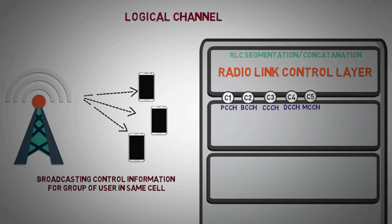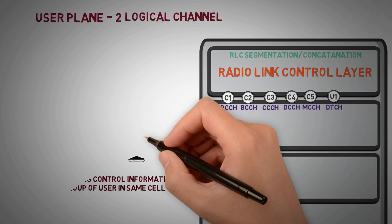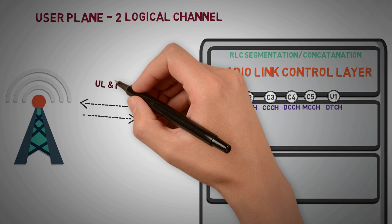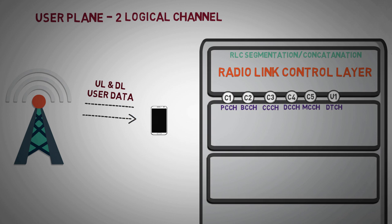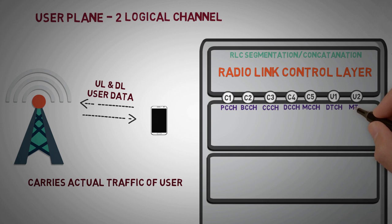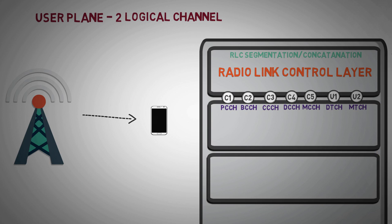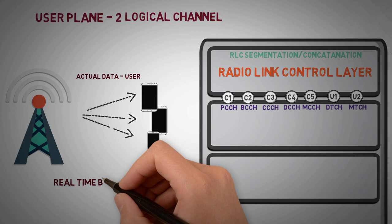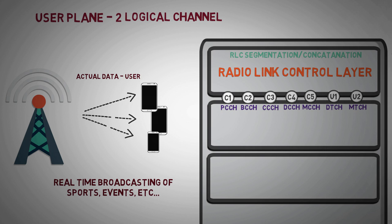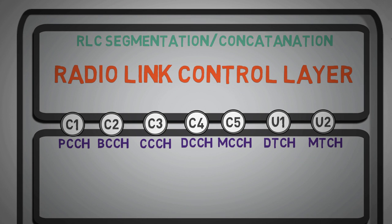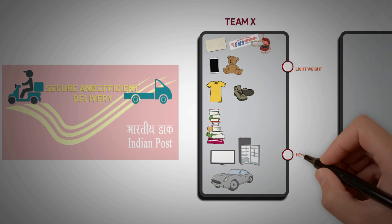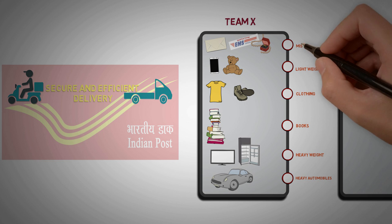There are 2 logical channels for user plane traffic. Dedicated traffic channel: this channel is used for both uplink and downlink of user plane data between user and network. Multicast traffic channel: this is a unidirectional channel. It is used to transmit traffic data from the network to multiple users for multicast broadcast services, such as real-time broadcasting of sports, events, etc. These all channels are alike team X in our example, who decide or segregate the traffic on the basis of type of data.